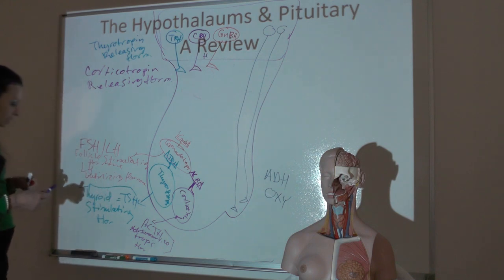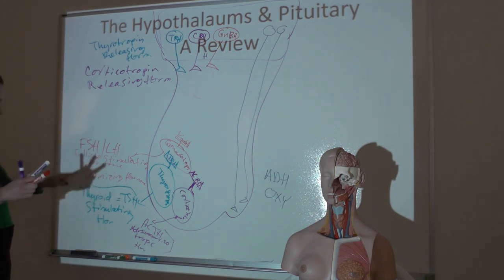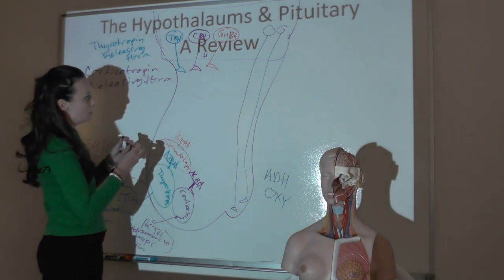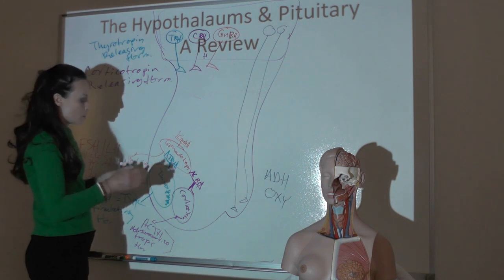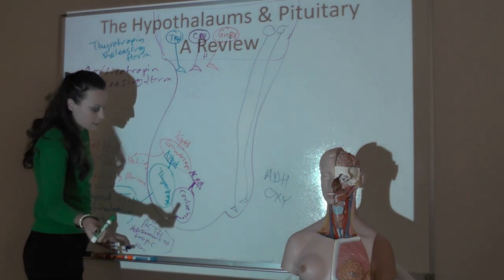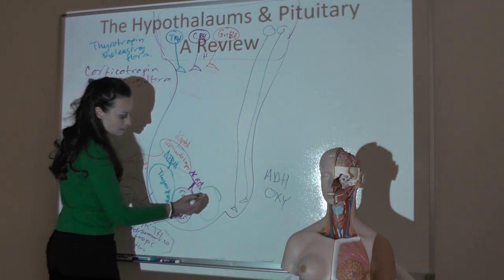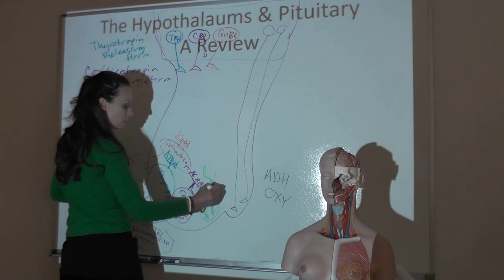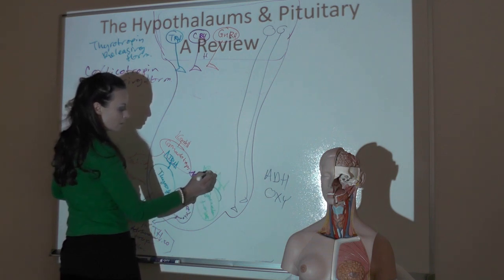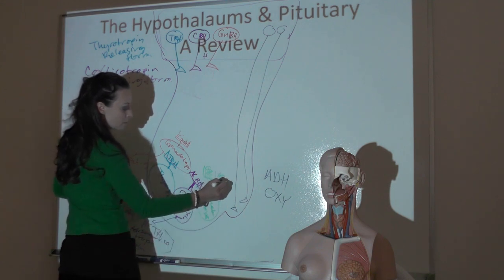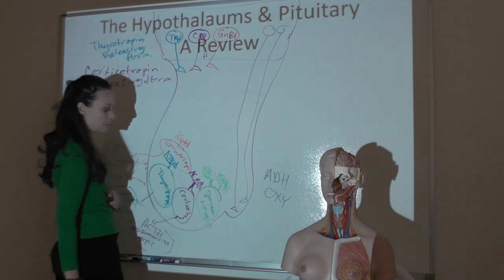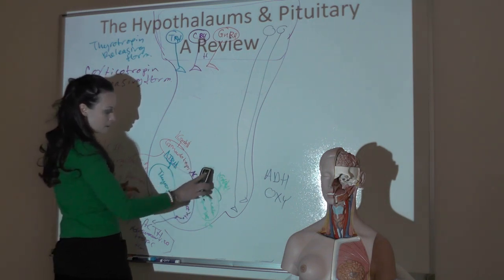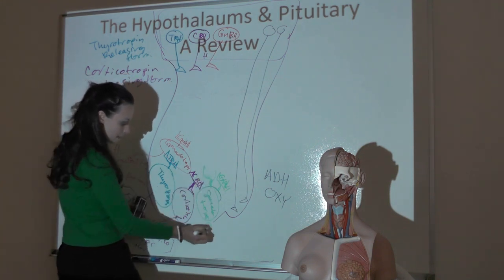Other hormones released from the anterior pituitary include growth hormone and prolactin. Growth hormone is released in growing individuals, coming from cells called somatotropes. It has dual regulation: an inhibitor called growth hormone-inhibiting hormone or somatostatin, and a stimulator called growth hormone-releasing hormone. If both are bound, no growth hormone is released because the inhibitor is more potent. At night, melatonin inhibits somatostatin, allowing growth hormone to be released.